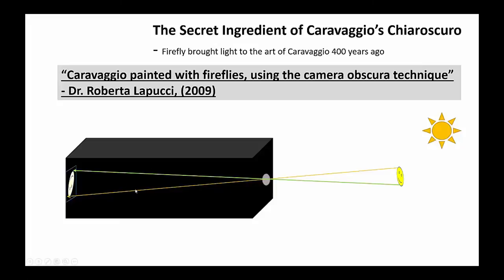But how did he do his painting in complete darkness? Caravaggio invented the technique of using crushed firefly powder together with lead, which provides a fluorescent powder. He actually painted his image on the canvas together with the firefly powder and lead, which allowed him to mark and draw the outline using the fluorescent light in that short period of time.